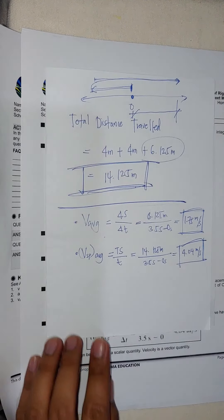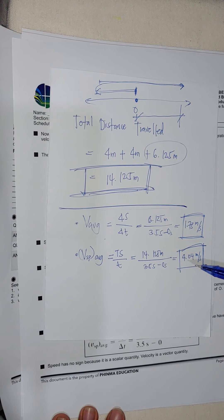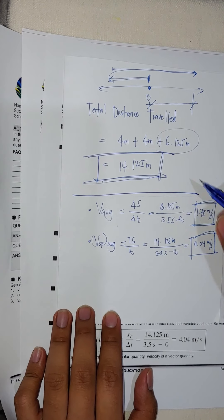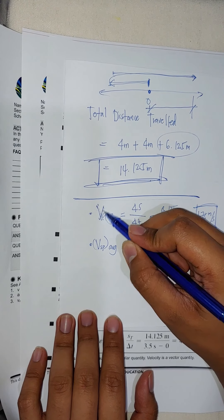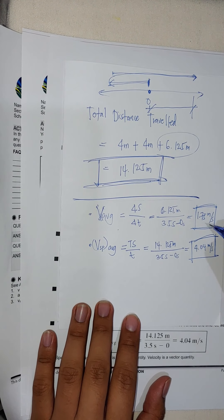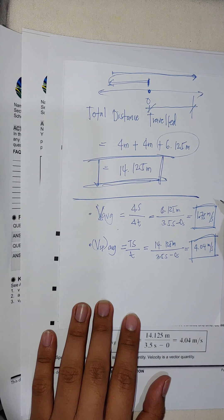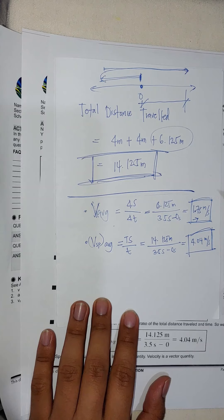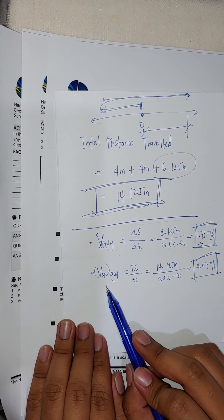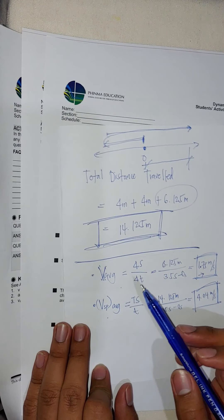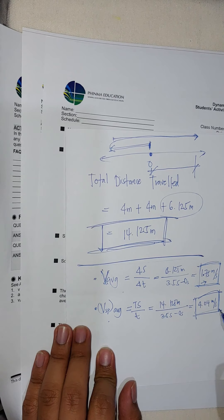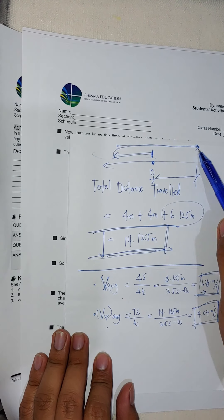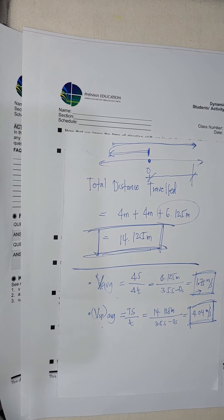Since velocity is a vector quantity, we must include direction: average velocity = 1.75 m/s to the right. Since speed is a scalar quantity, no direction is needed: average speed = 4.04 m/s.